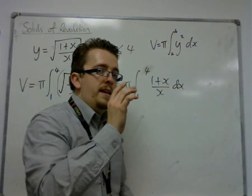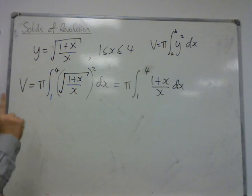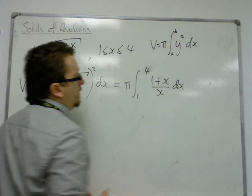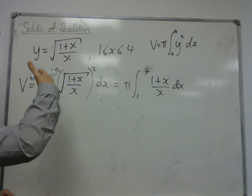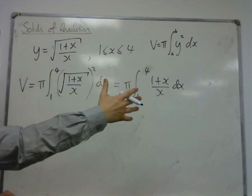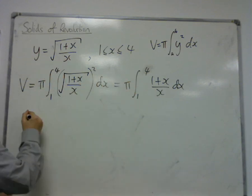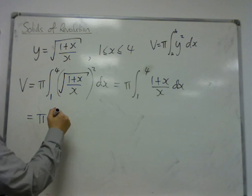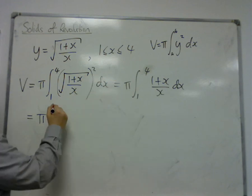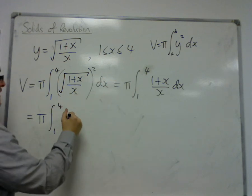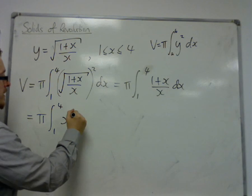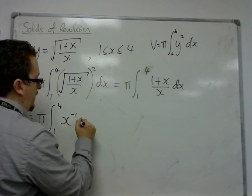Now, before we can integrate, we've just got to make sure that we rewrite this as ax^p + bx^q. So, we can break apart that fraction and write it as 1 over x. So, x⁻¹ plus x over x. That's 1.